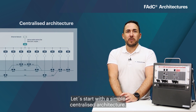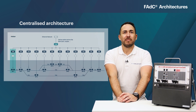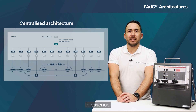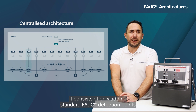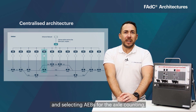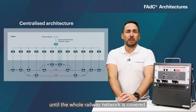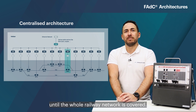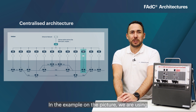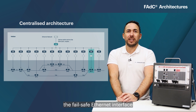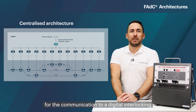Let's start with a simple centralized architecture. In essence it consists of only adding standard FADC detection points and selecting A-Bs for the axle counting until the whole railway network is covered. In the example on the picture we are using the failsafe Ethernet interface for the communication to a digital interlocking.